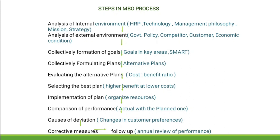Deviation means differences. You need to find out the causes of deviation — for example, a change in consumer preference. Once you know the causes, the next step is applying corrective measures to resolve the deviation and bring your performance back to the targeted, planned level.